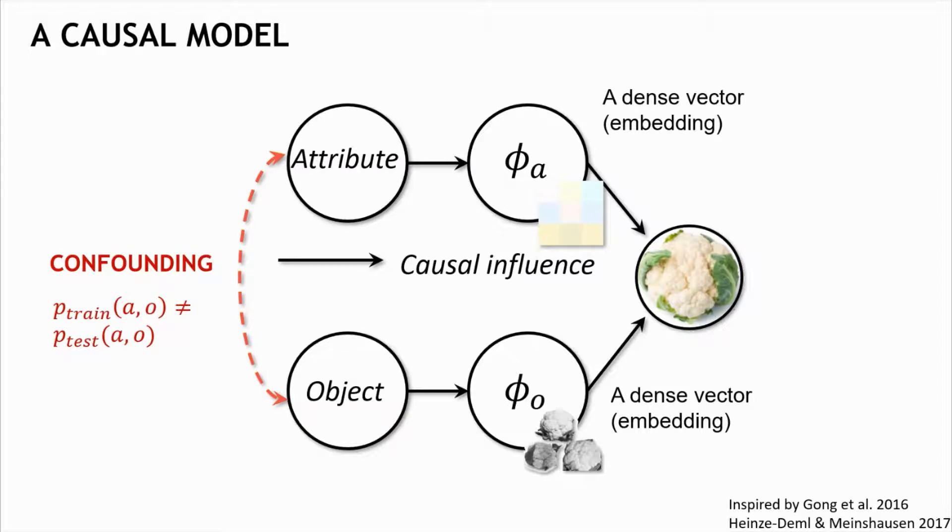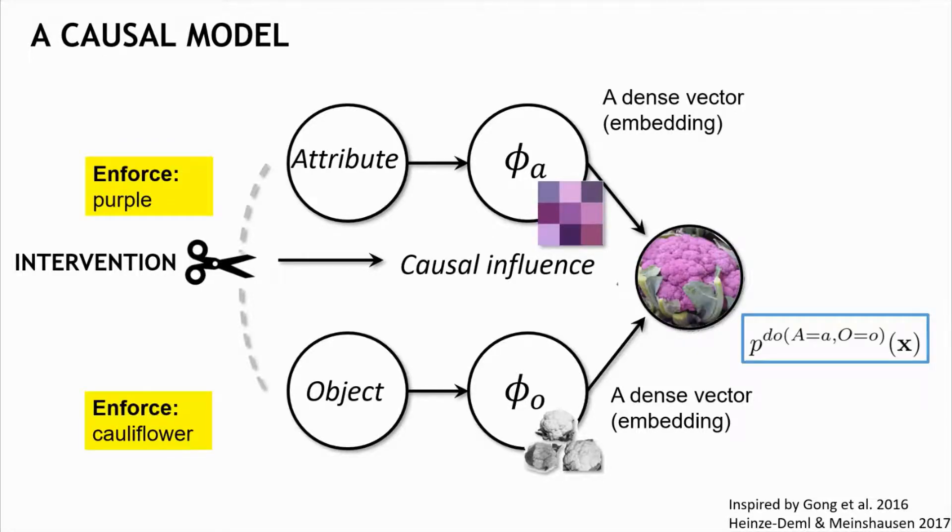This leads us to the concept of intervention, where something interferes with the causal graph that generates the training data, overrides the edge that entangles the attributes and objects, and enforces the physical mechanism to generate an image of a new composition. The distribution of such samples is called the interventional distribution. In this example, the intervention enforces the attribute to be purple and the object to be cauliflower, and jointly they generate an image of a purple cauliflower.